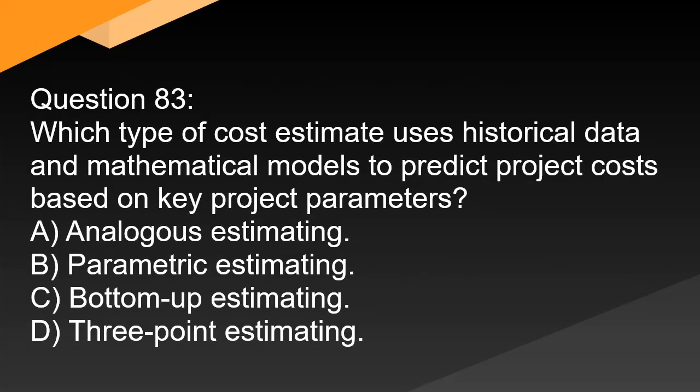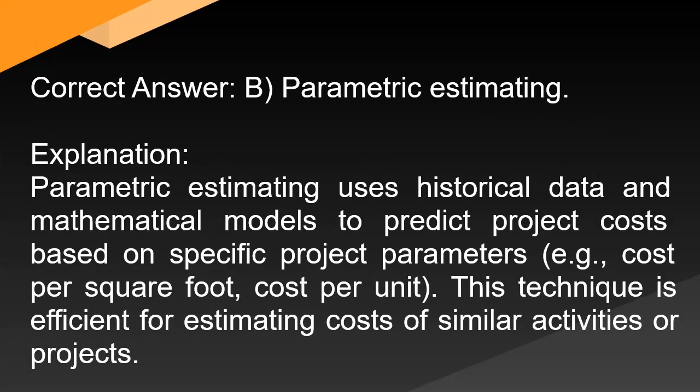Question 83: Which type of cost estimate uses historical data and mathematical models to predict project costs based on key project parameters? A. Analogous estimating. B. Parametric estimating. C. Bottom-up estimating. D. Three-point estimating. Correct answer: B. Parametric estimating. Explanation: Parametric estimating uses historical data and mathematical models to predict project costs based on specific project parameters (e.g., cost per square foot, cost per unit). This technique is efficient for estimating costs of similar activities or projects.